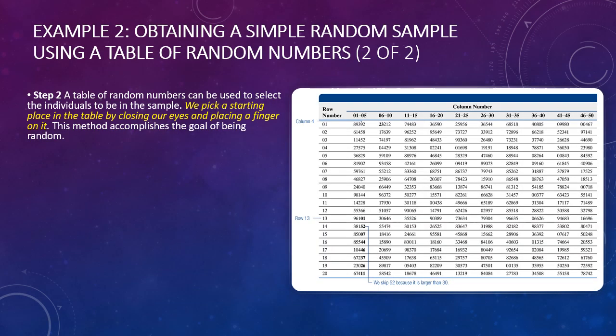Okay, Step 2 is to actually—if we had a random table, which we have a table of random numbers here—we can use that table then to select the individuals in the sample. So the first thing we have to do is pick a starting point in the table, and we do that by closing our eyes and placing a finger on it, and then this method also accomplishes the goal of it being random. So you could have picked any number.